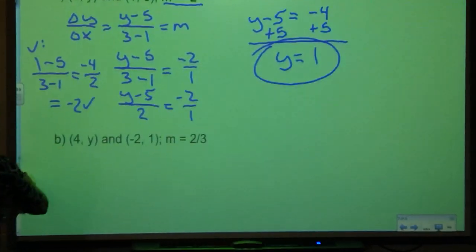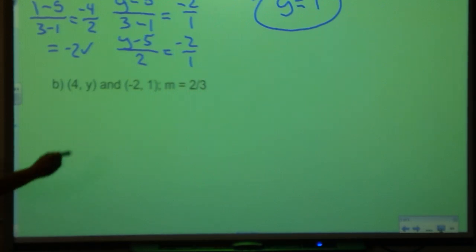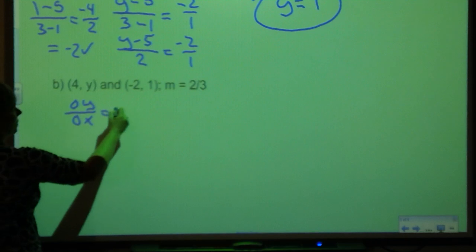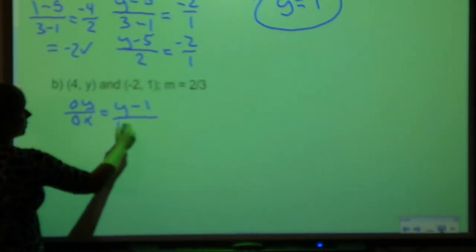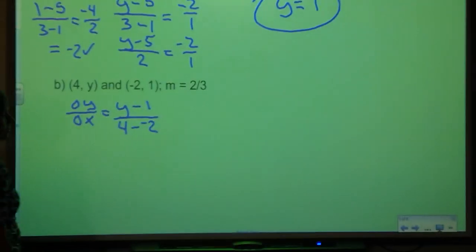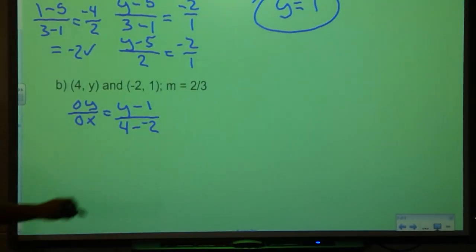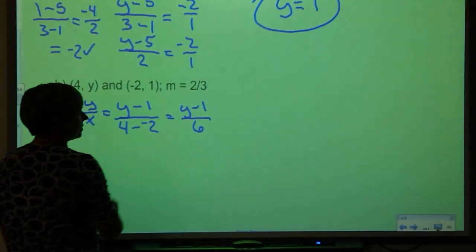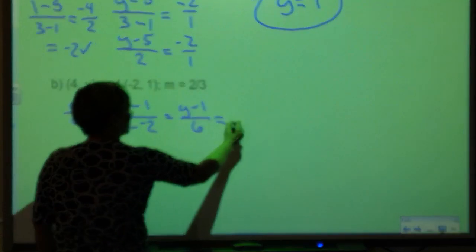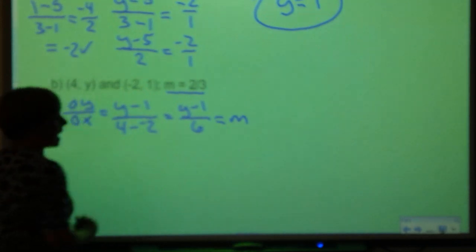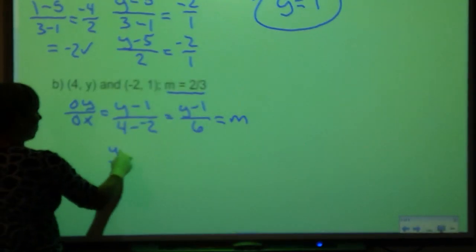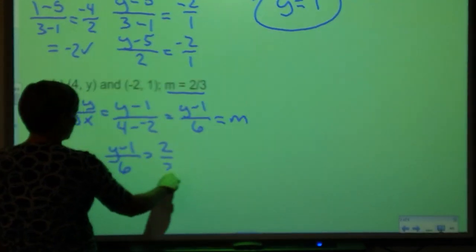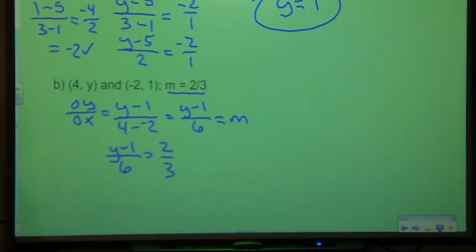Let's look at another example just like that. I'm going to do my change in y over change in x, which gives me y minus 1 over 4 minus -2. If I simplify that, then I'll have y minus 1 over 6. I know this is equal to m, and I know my m is 2/3. So that means I have (y - 1)/6 equals 2/3. Now I can cross multiply.